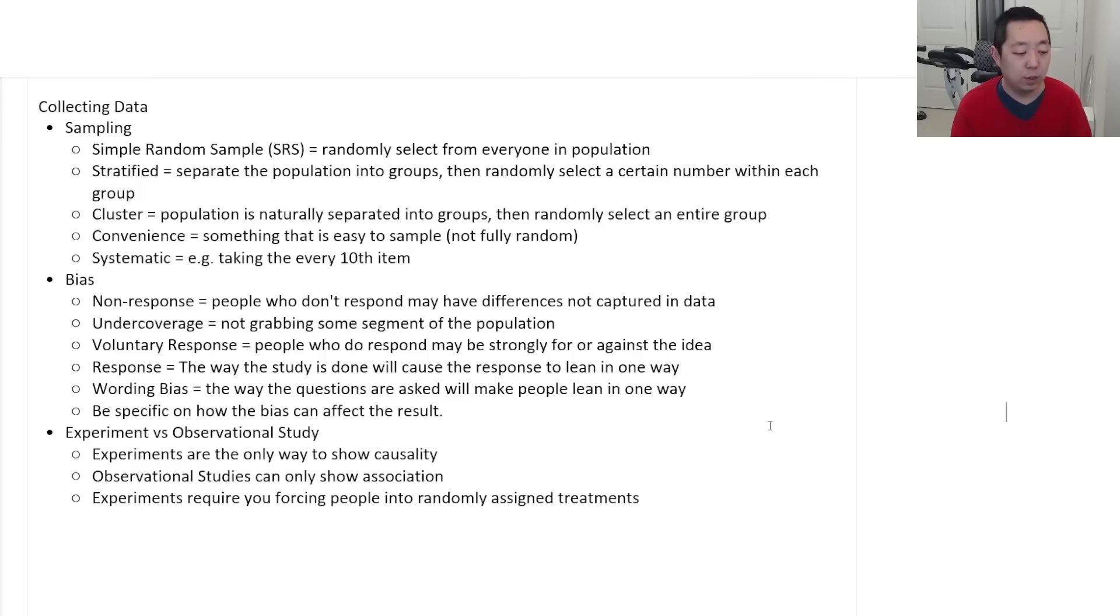For example, suppose I want to know if smoking causes cancer. Observational study is I study the people who have smoked and study the people who haven't smoked and I observe the incident rates of cancer. That's an observational. I did not force them to smoke or not. Experiment would be like I take two random groups of people. I force this group of people to smoke. I force this group of people to not smoke. And then I compare their results.